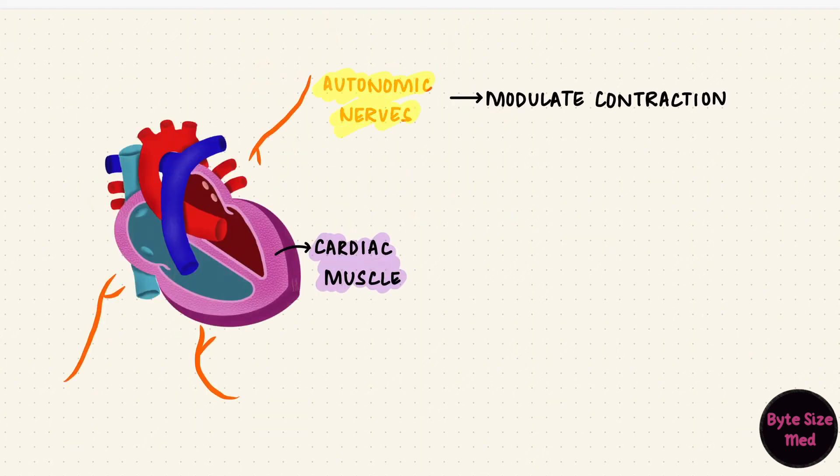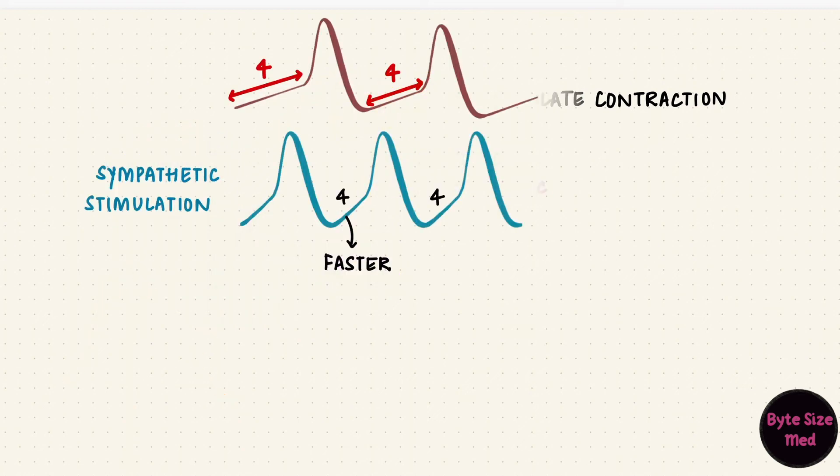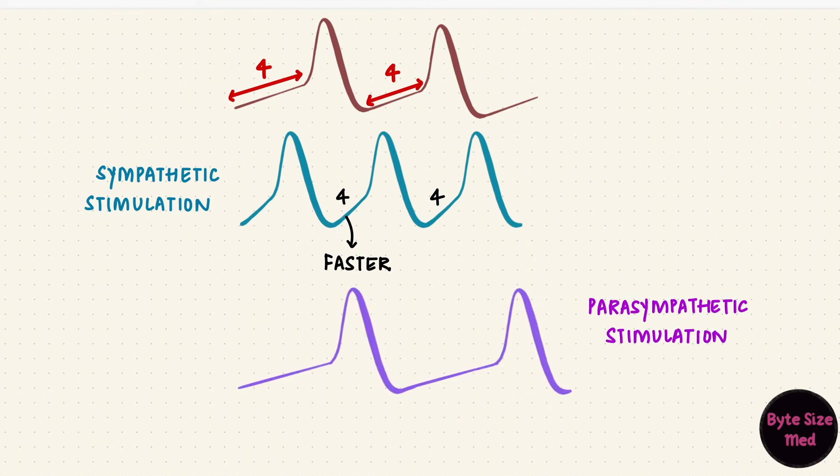Remember that the heart is supplied by the sympathetic and the parasympathetic nerves. They don't initiate contractions, but they can change the rate. And this is one way that they do that. Parasympathetic stimulation would do the opposite. It slows down the rate of phase four depolarization. So there are fewer action potentials and a lower heart rate.